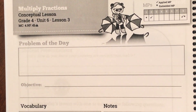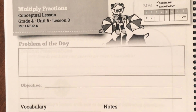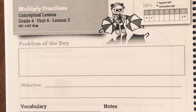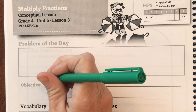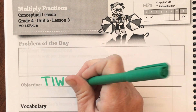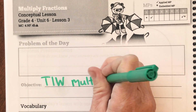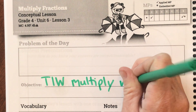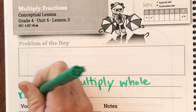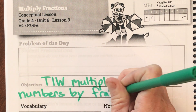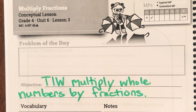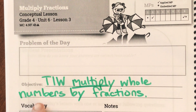Good morning, fourth graders. Today we're on page 189 of your student journal. Our objective today is: Today I will multiply whole numbers by fractions. So let's look at our vocabulary.